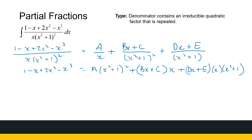What we can substitute in is x equals 0. My left-hand side is 1. On the right-hand side, both the second and third terms become 0, so I've got A equals 1. That's a good start. But now there's nothing else I can substitute in, so I'm going to start looking at specific terms.